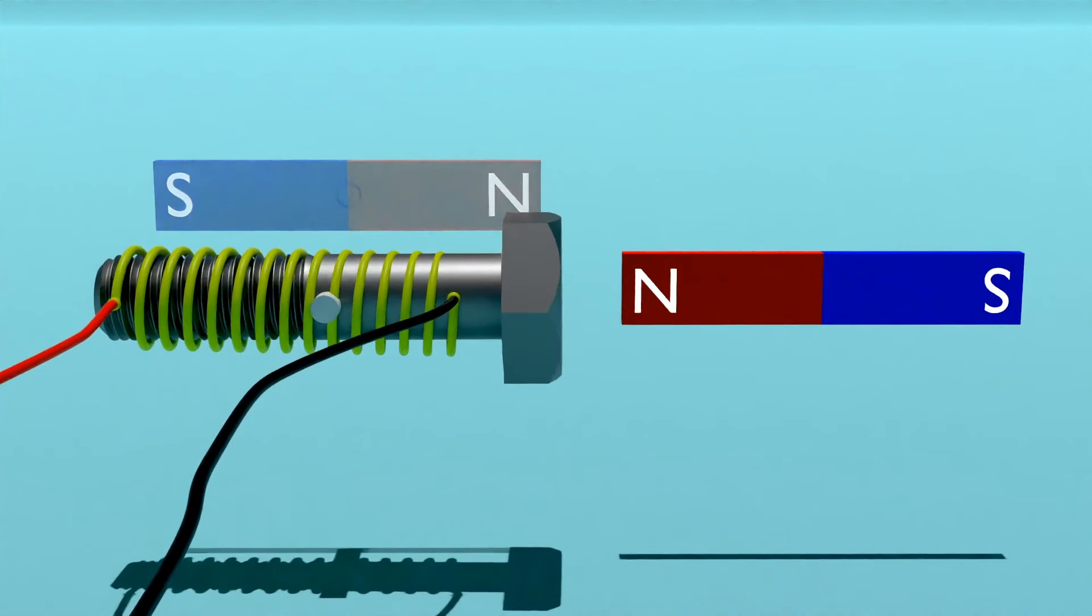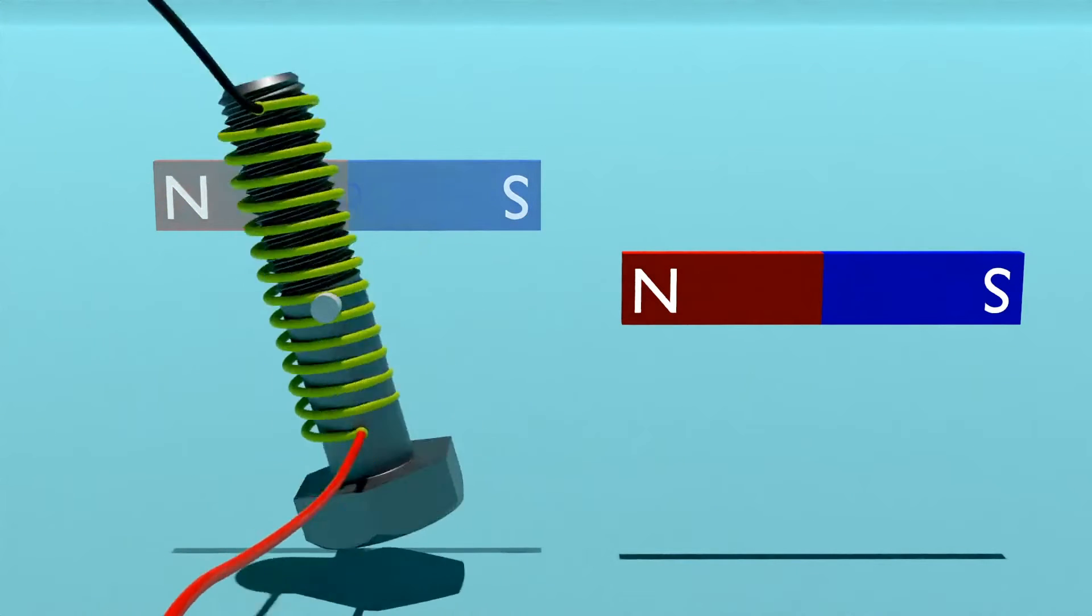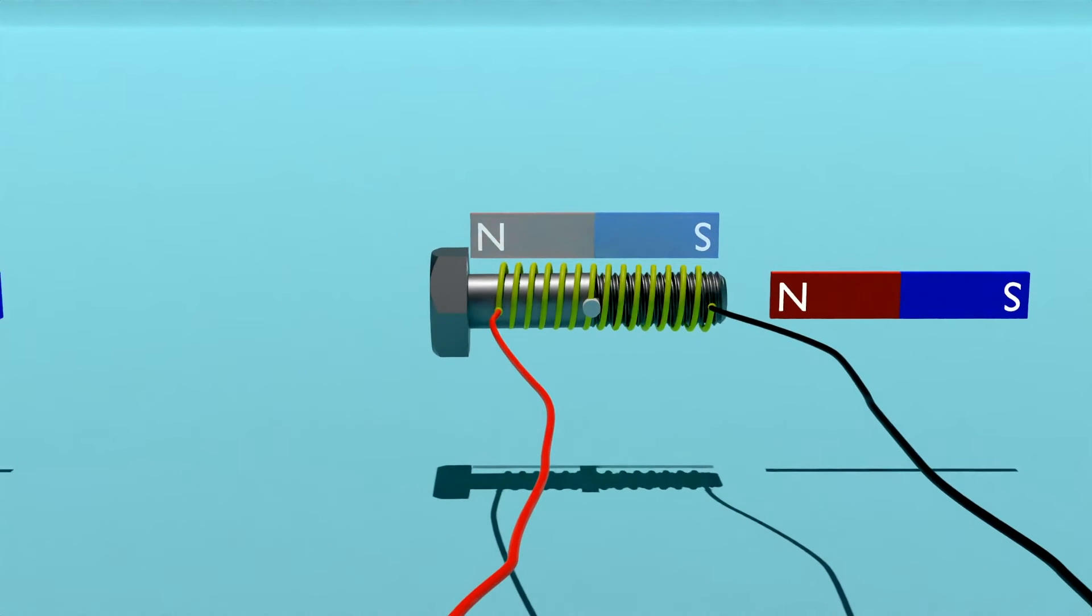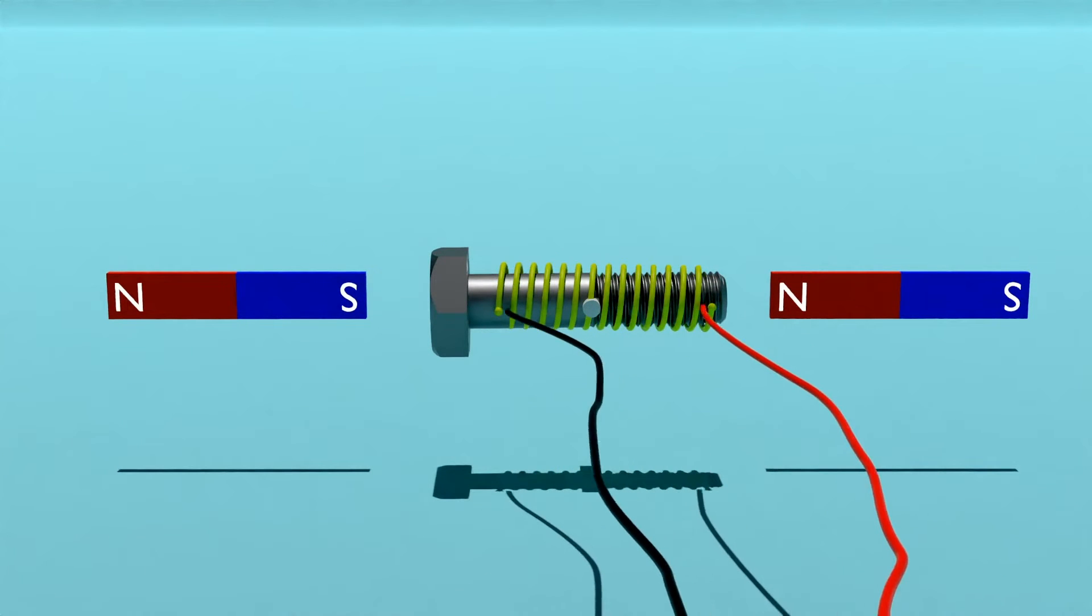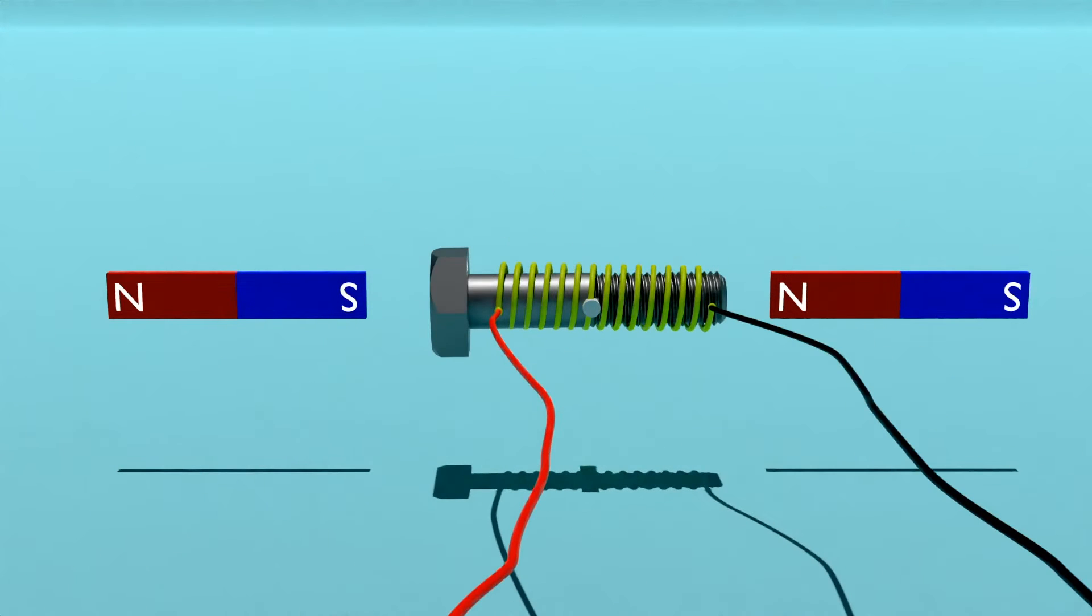In reality, these wires will obstruct the spinning of the magnet, but that is not the important thing here. Now to make it more efficient, we will add another magnet on the other side. Both of these side magnets work together to spin the electromagnet. This is the very basics of a DC motor.